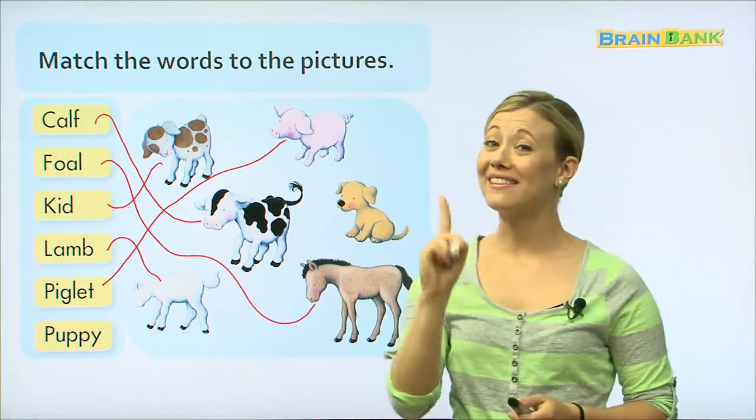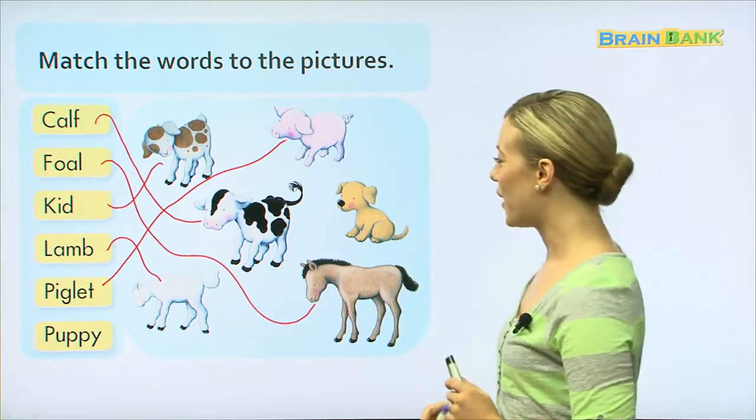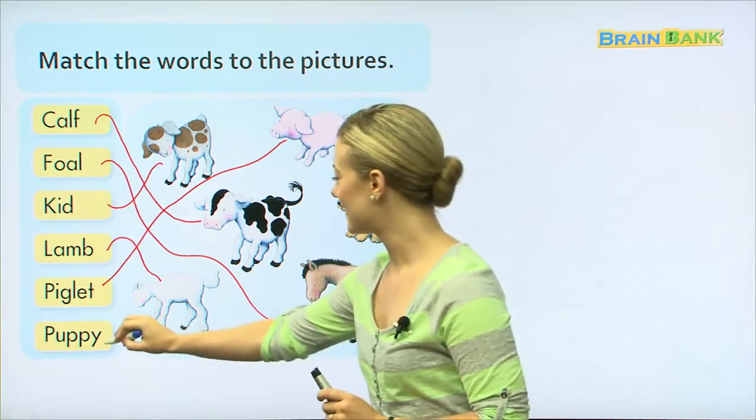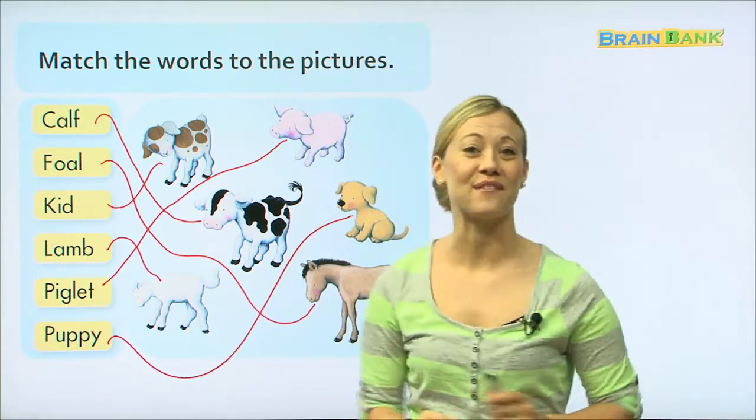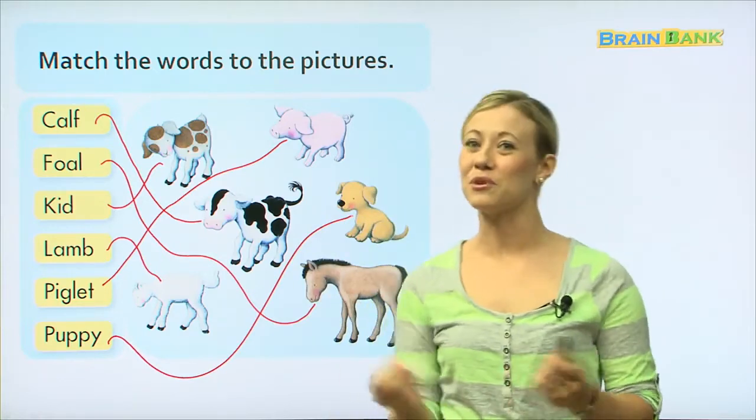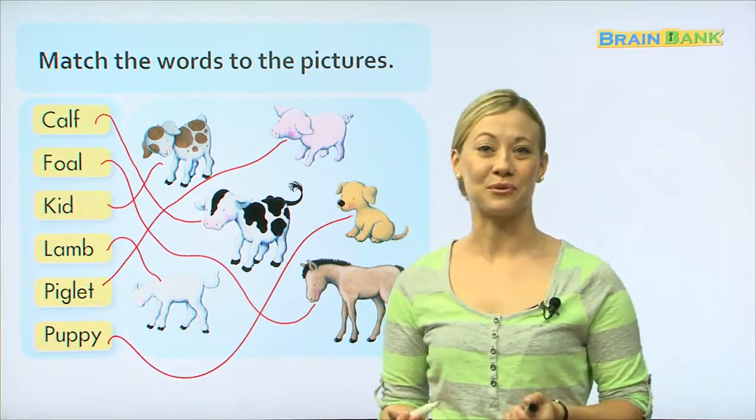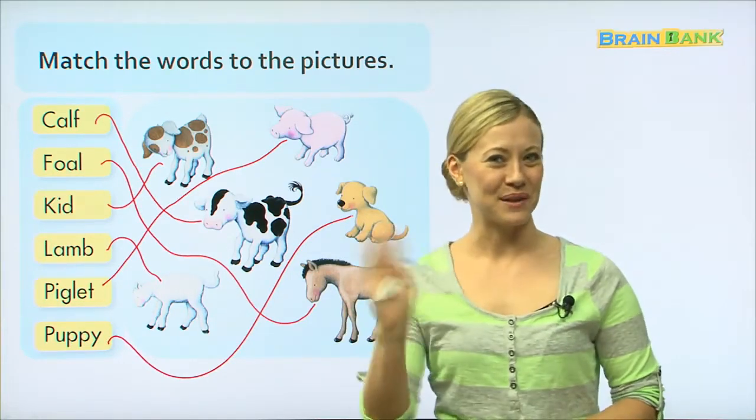And we have one left. Probably the easiest one, too. A puppy is a baby dog. And he's right here. Maybe you have a puppy at home. So very good with the game. You remembered all of the animals correctly. Thank you for playing, and I'll see you again soon. Bye-bye.